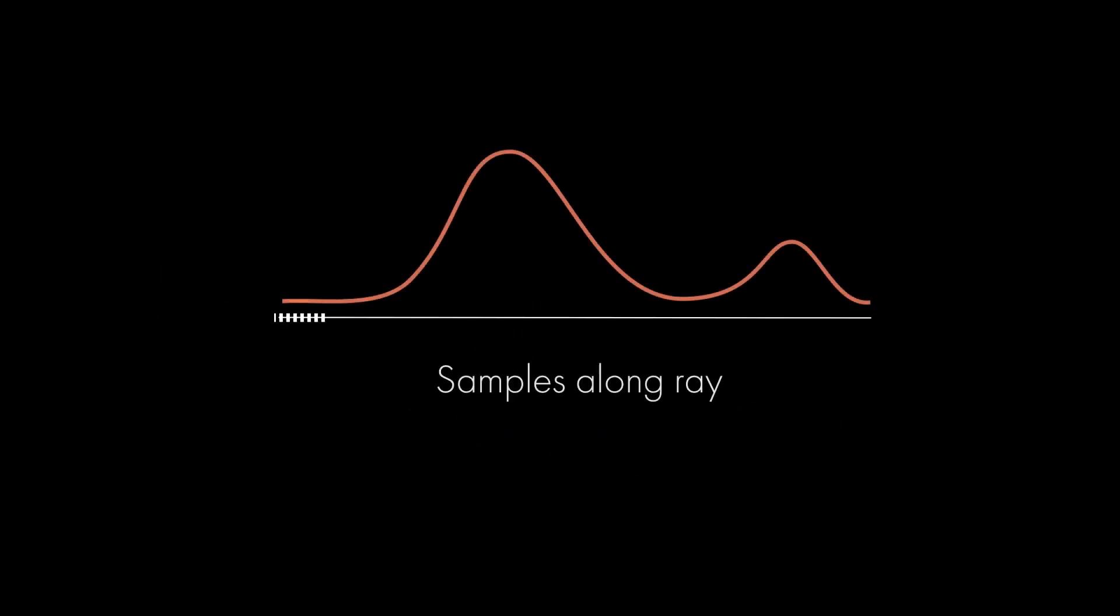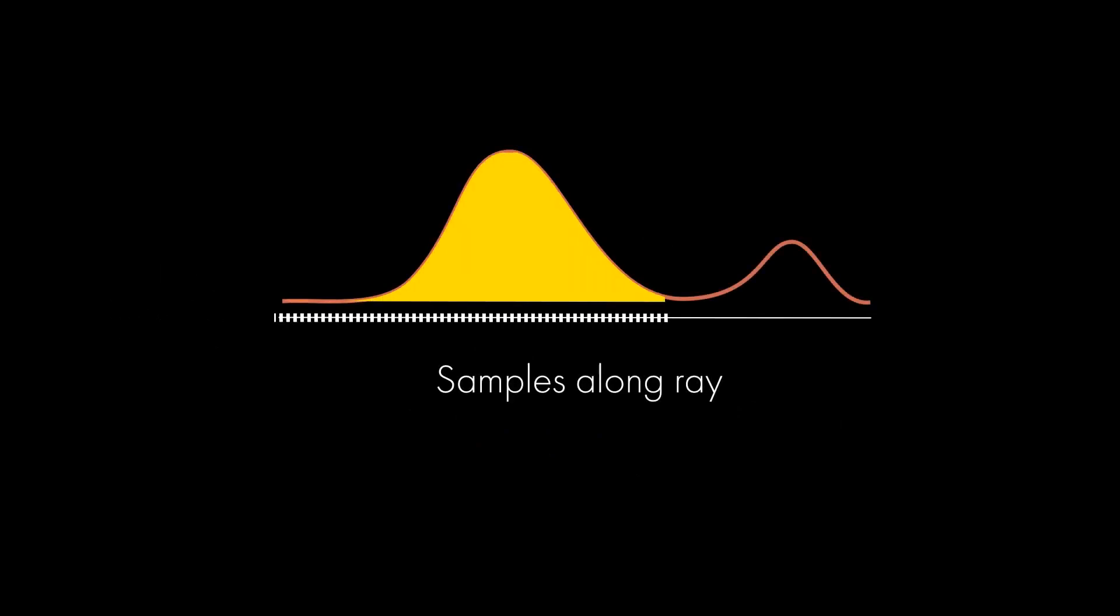This technique involves evaluating integrals along rays through a learned volume in order to render a scene. However, evaluating these rays is computationally inefficient, requiring millions of queries to a neural network to sample each ray, approximate the integrals, and render an image.